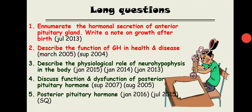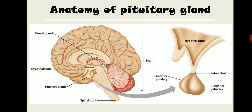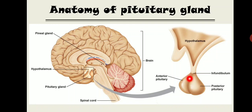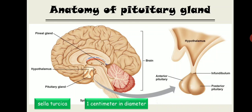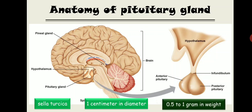Before we start our actual discussion, let's begin with the anatomy of the pituitary gland. As you can see in this cross-section of the brain, the cerebellum is the posterior portion of the brain. The pituitary gland is situated just below the hypothalamus — this is the hypothalamus, this is the posterior pituitary, and this is the anterior pituitary. The pituitary gland is situated in a pocket known as sella turcica, located in the sphenoid bone at the base of the brain. Its actual size is about 1 centimeter in diameter and 1 gram in weight.